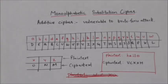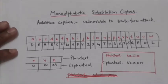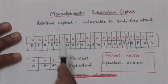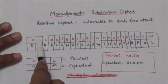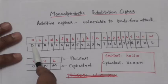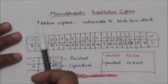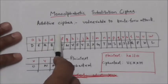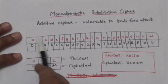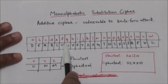In monoalphabetic substitution cipher, a mapping is created between each plaintext character and the corresponding ciphertext character. Both the sender and receiver can agree on a table which shows the mapping for each character.